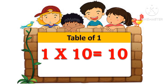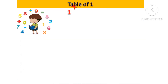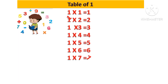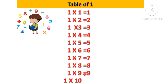Let's revise. 1 one is 1, 1 two's are 2, 1 three's are 3, 1 four's are 4, 1 five's are 5, 1 six's are 6, 1 seven's are 7, 1 eight's are 8, 1 nine's are 9, 1 ten's are 10.